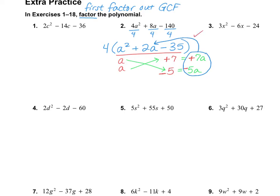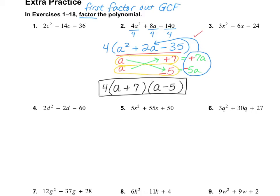So now we need to write our answer. Don't forget that there's a 4 still out front. We're going to write our two answers that go inside the parentheses — one parenthesis is a plus 7, and the other is a minus 5. And there we have our answer.